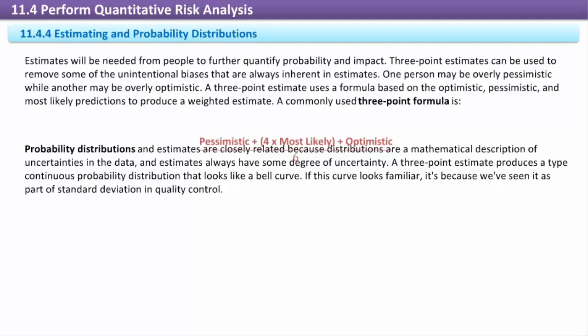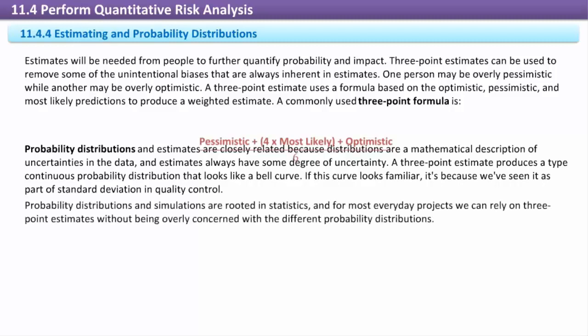Probability distributions and estimates are closely related because distributions are a mathematical description of uncertainties in the data, and estimates always have some degree of uncertainty. A three-point estimate produces a type continuous probability distribution that looks like a bell curve. If this curve looks familiar, it's because we've seen it as part of standard deviation in quality control. Probability distributions and simulations are rooted in statistics, and for most everyday projects we can rely on three-point estimates without being overly concerned with the different probability distributions.